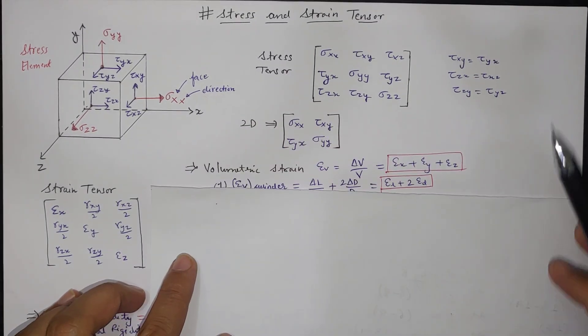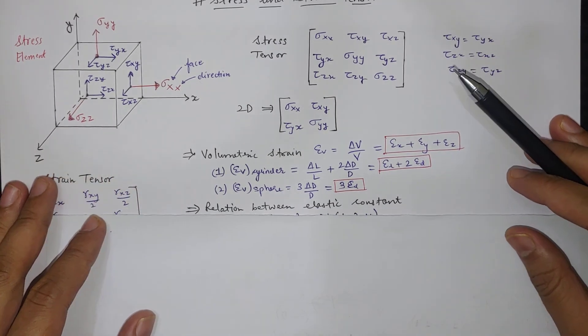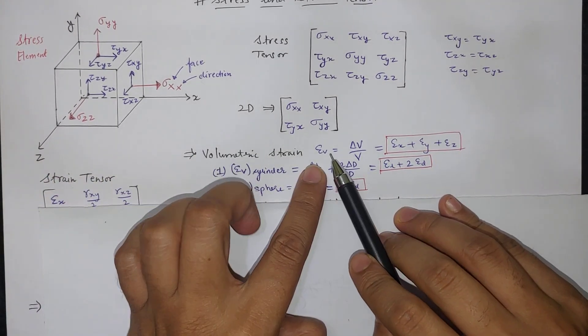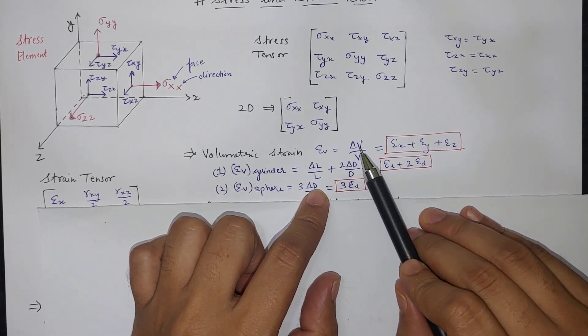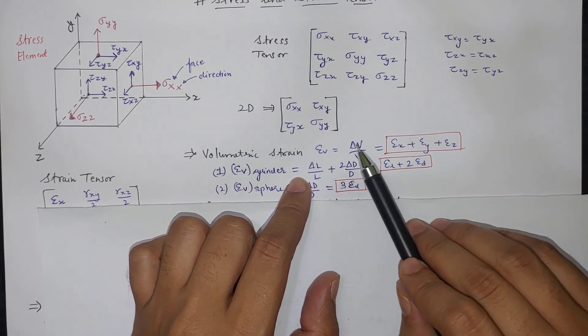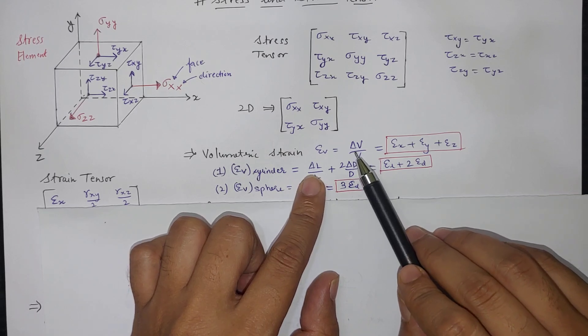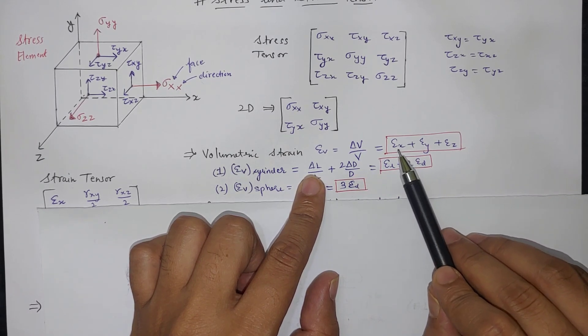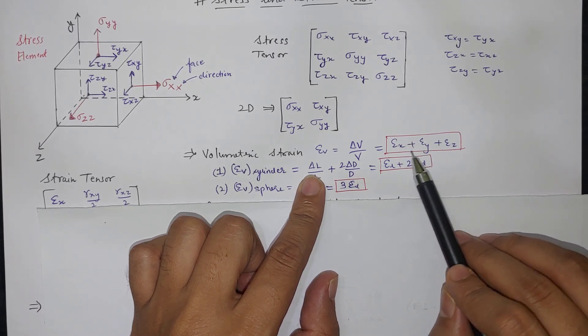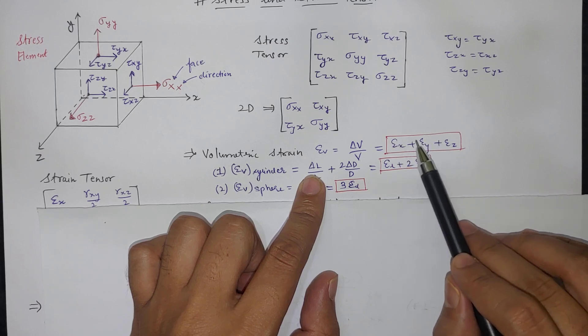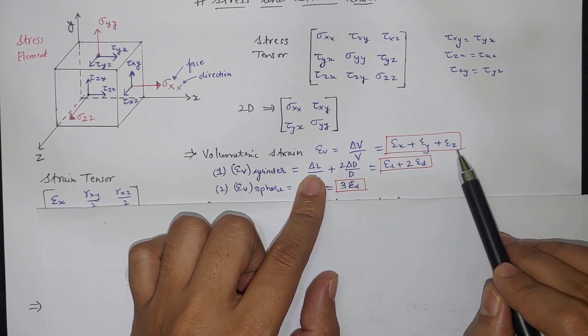Now we will define some terms where first is volumetric strain. So here in volumetric strain if you see strain is change in length upon original length, but for volumetric it is change in volume upon original volume and if you calculate it then it is strain in X, Y, and Z direction and the summation of that.